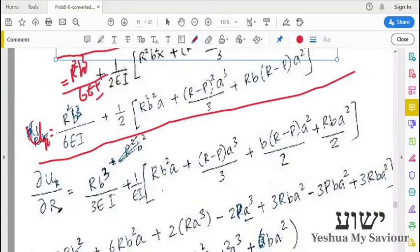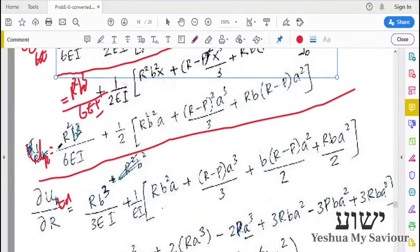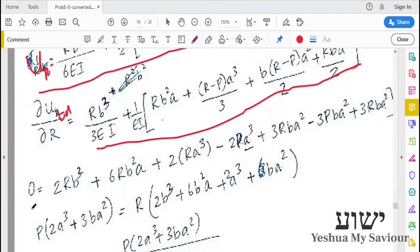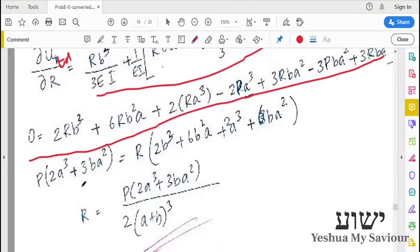Differentiate U_total with respect to R. You can see that we have R squared here, R squared here, and also we have R squared here. We can differentiate this equation and we will get this equation. After differentiating, we set it to zero and we will get R in terms of P.